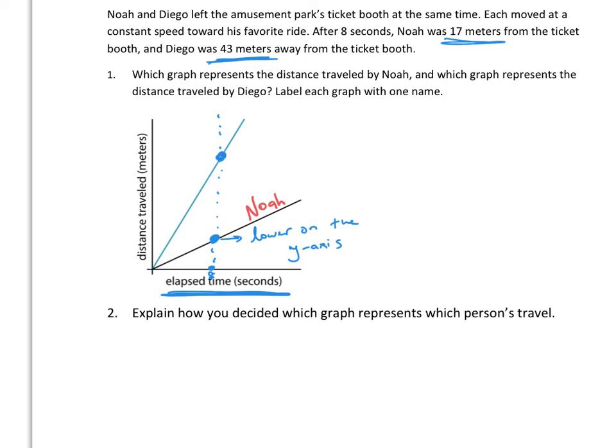In the same token, the top one must represent Diego's speed.